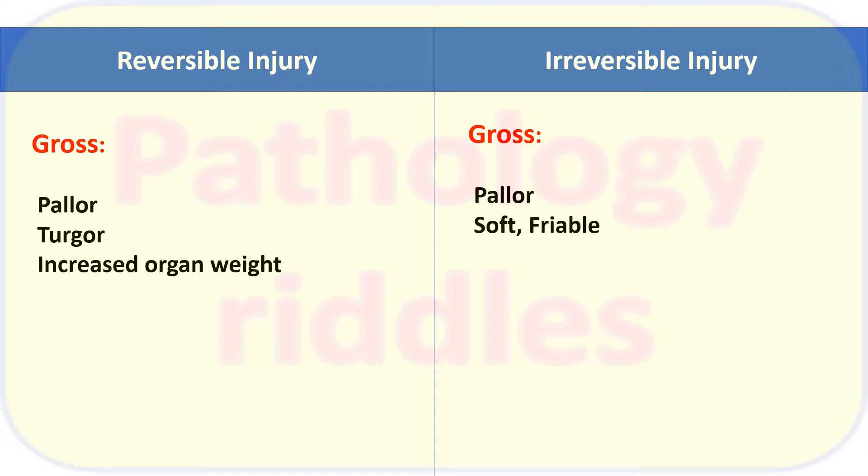In irreversible injury the cell integrity is lost, so the cells do not adhere to each other. The tissue becomes friable and easily breaks off.